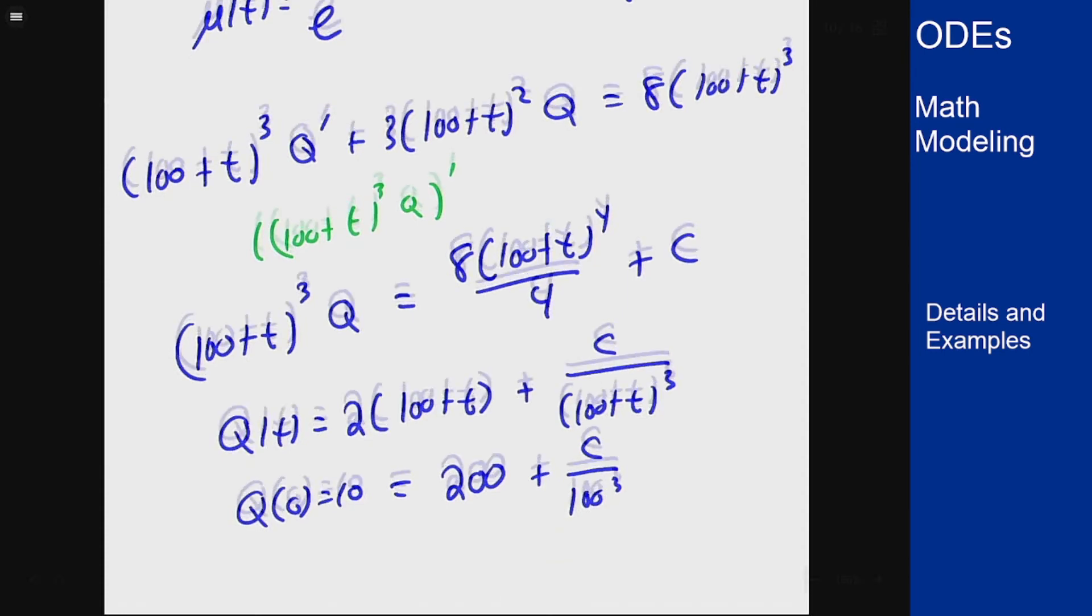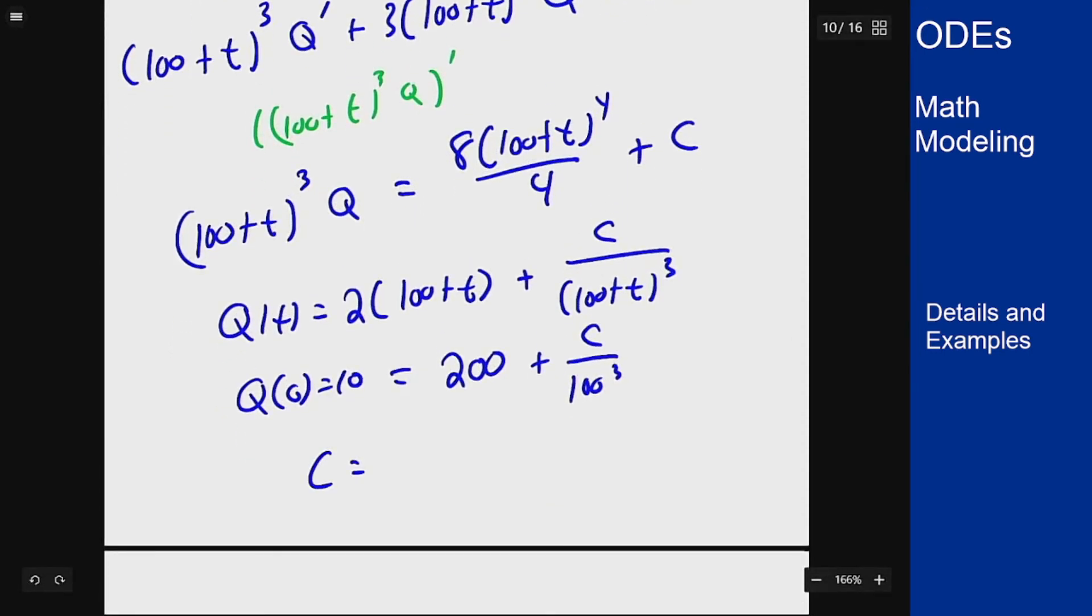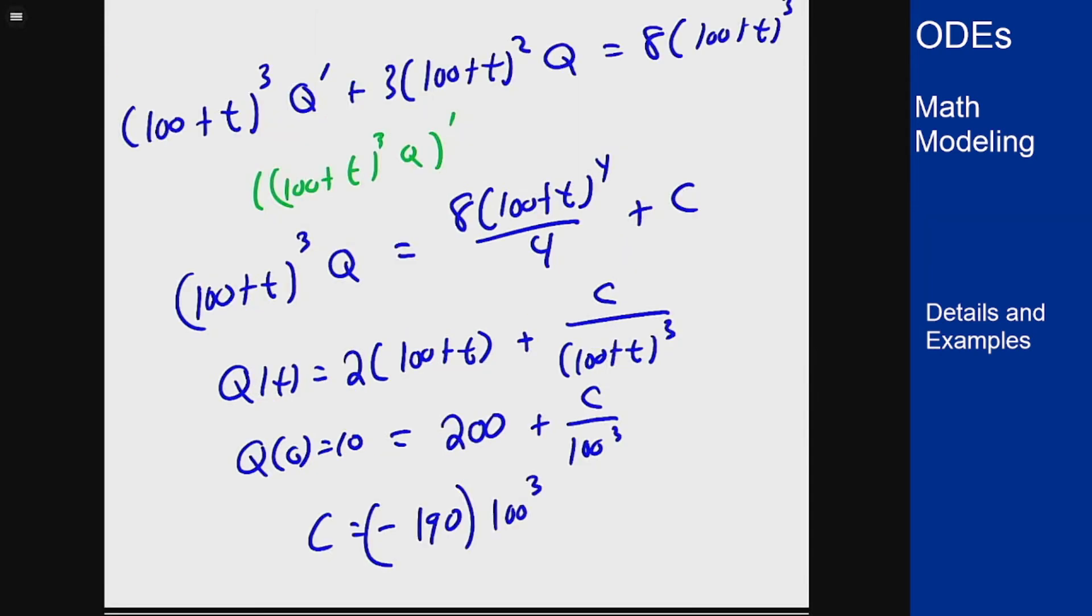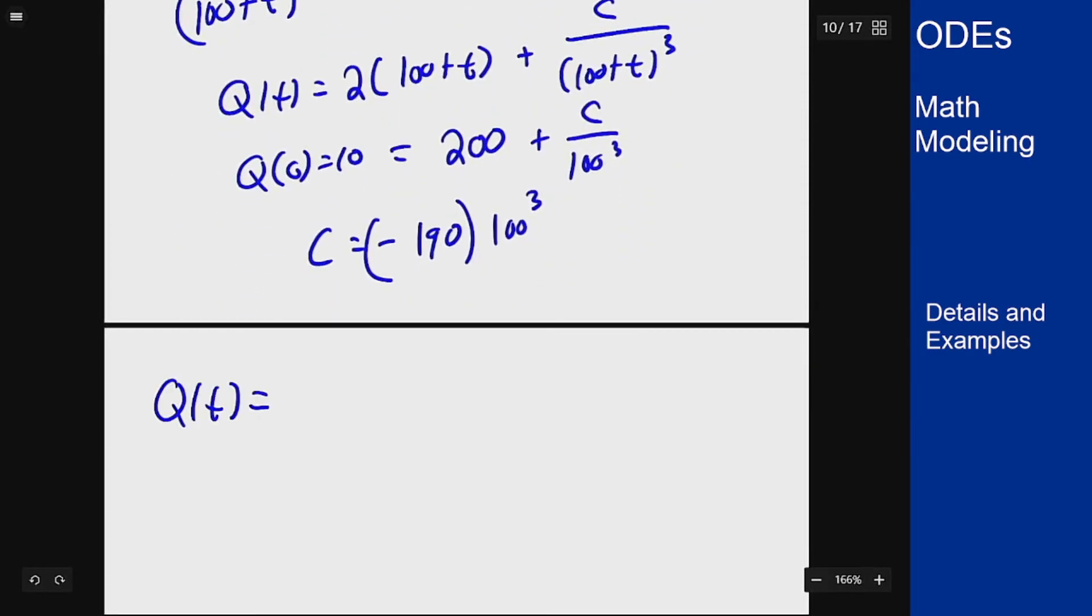Which means that my c needs to be negative 190 times 100 cubed, which gives me a final solution when I plug in that value.